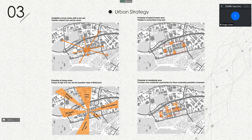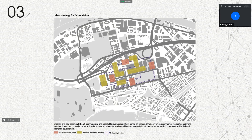The open structure strategy includes: first, stability of a local center with mixed use, radiating outward from 7th Street; second, a potential hybrid tower area, where towers radiate around the living area offering potential living views — people at higher levels can see beautiful urban views; and third, residential areas providing more residential opportunities for the future expanding population. The urban strategy for future versions focuses on creating a new community heart, with commercial and community life circling around the center of Salmon Street by linking commercial, residential, and living together, providing convenience for residents' fast-paced urban life and more potential for future urban expansion in terms of residential and economic development.